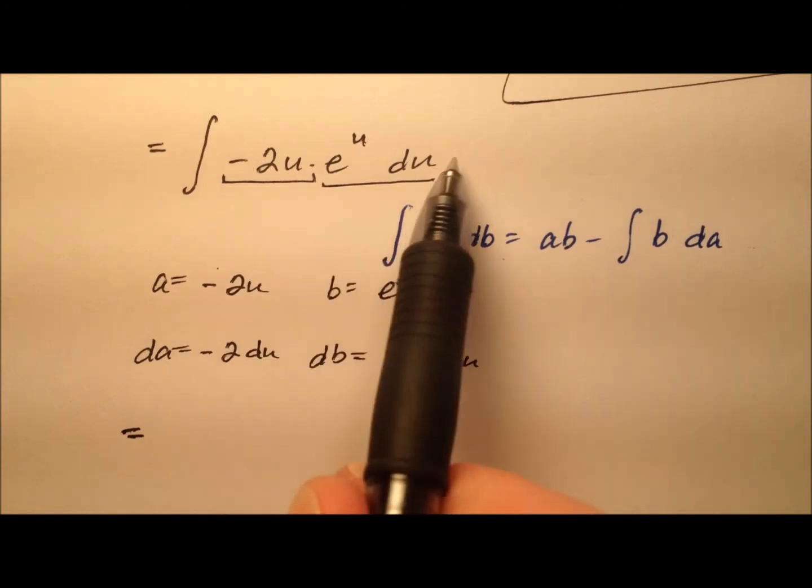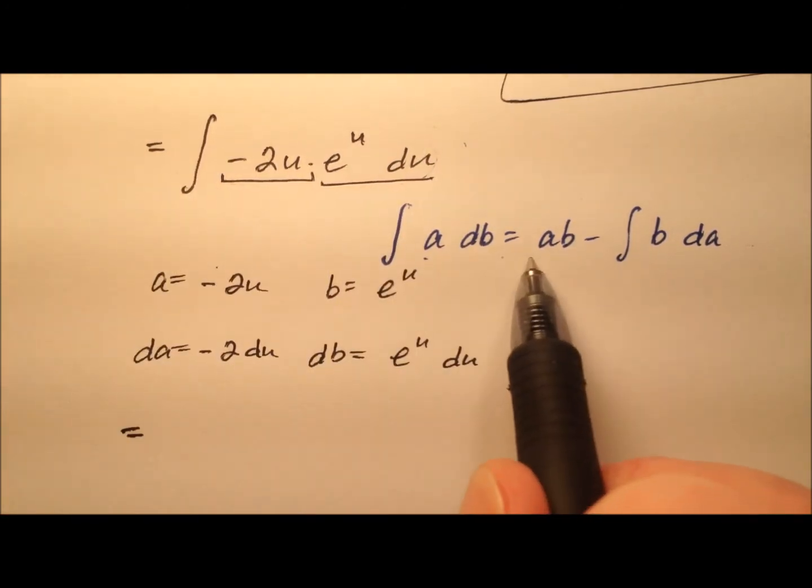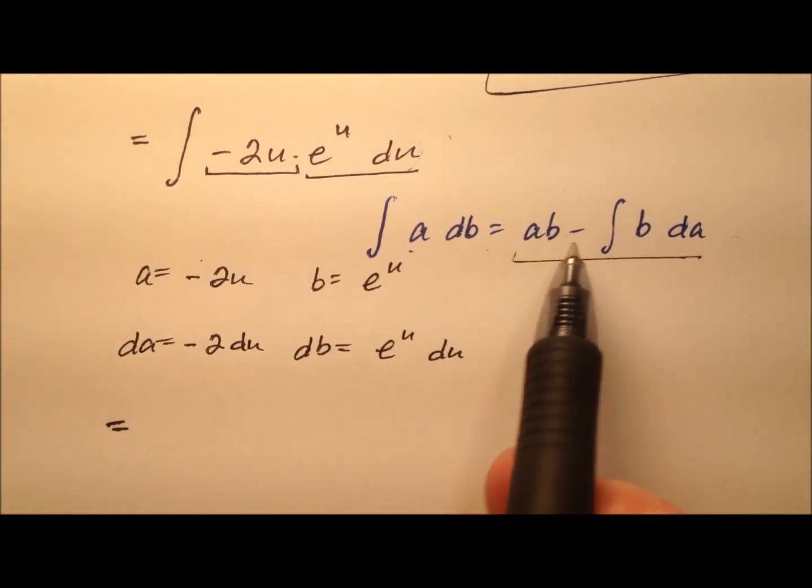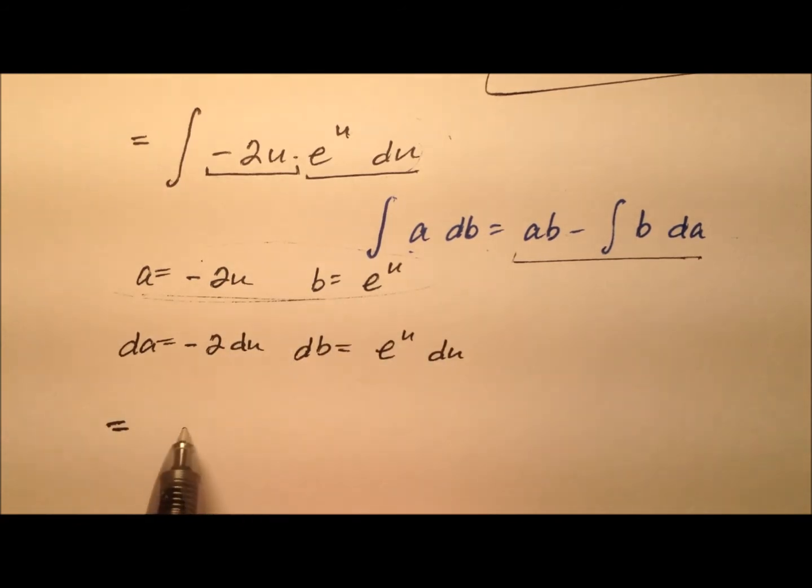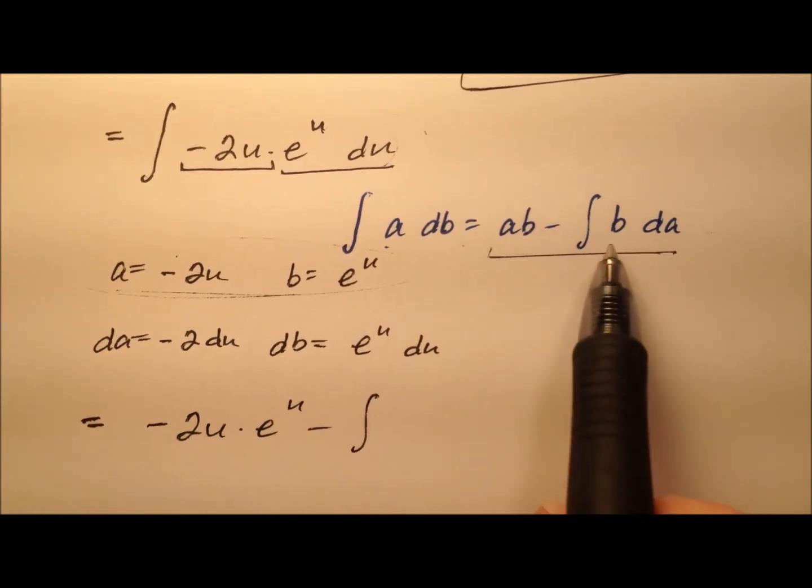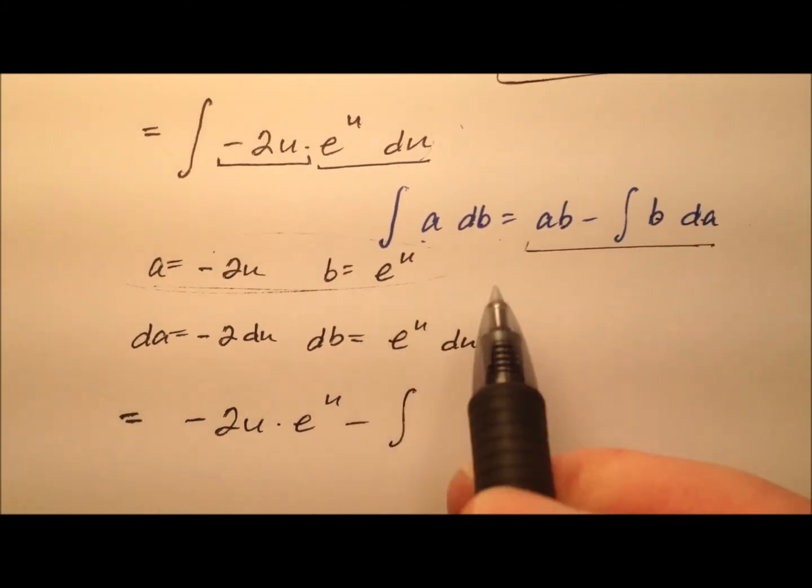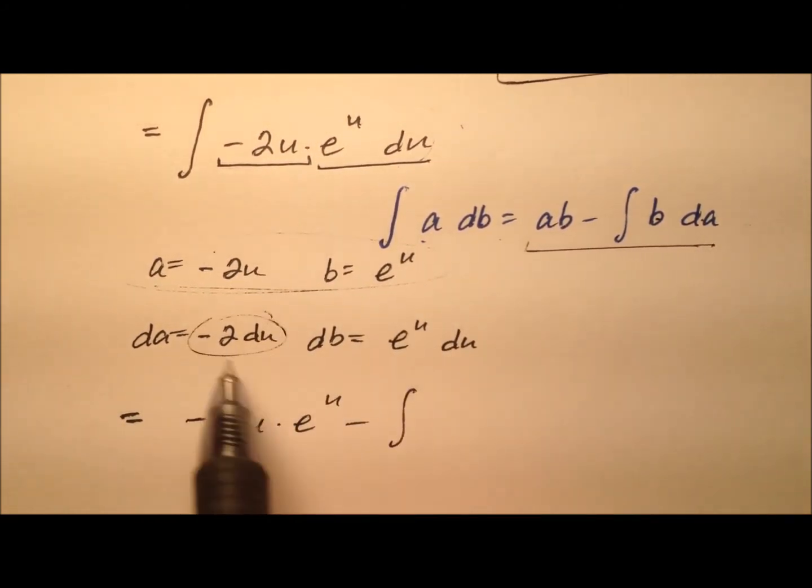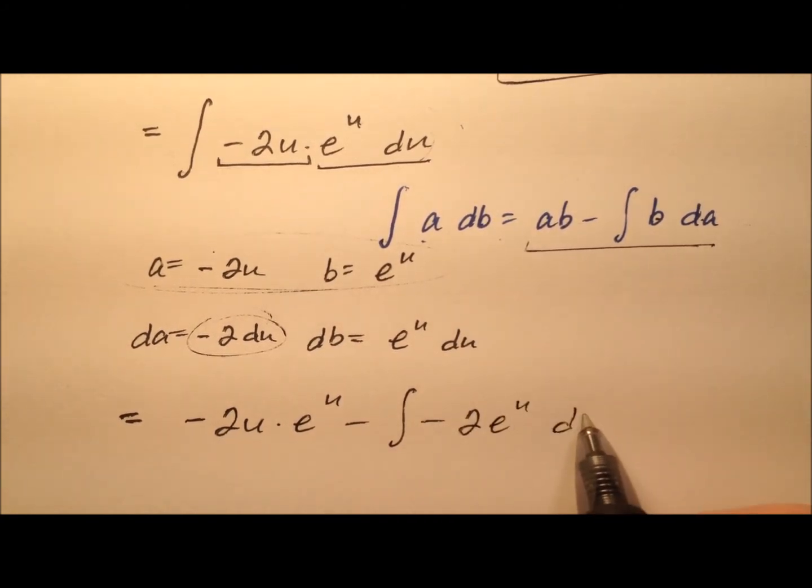So I can now write this integral in this form. So it'll be ab. So these two guys multiply together. So negative 2u times e to the u minus and then b da. So e to the u times this guy. So we'll say minus 2e to the u du.